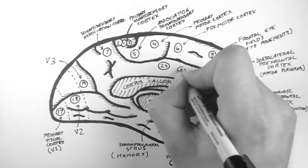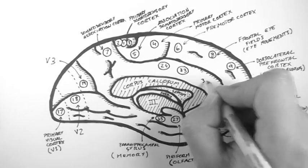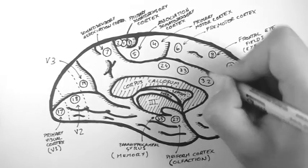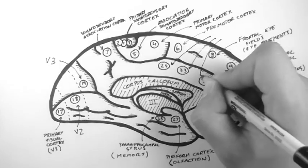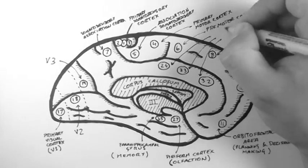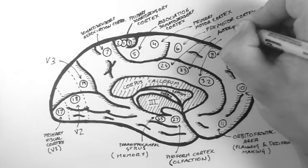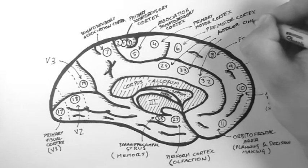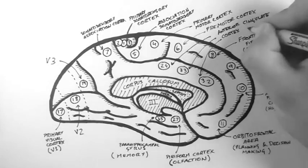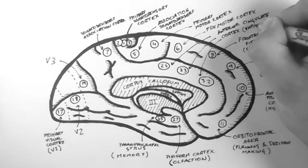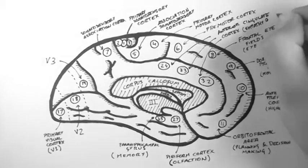Now, up here is the three areas in the cingulate cortex, area 24, 33, and 32. And these make up the anterior cingulate cortex, which is an area believed to be involved in empathy and emotion.